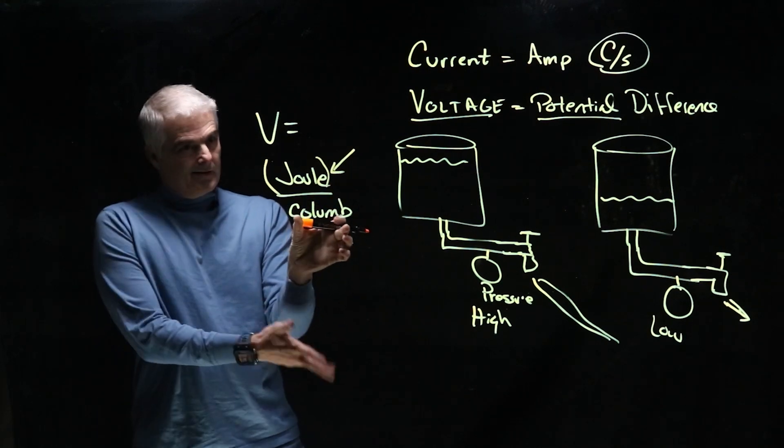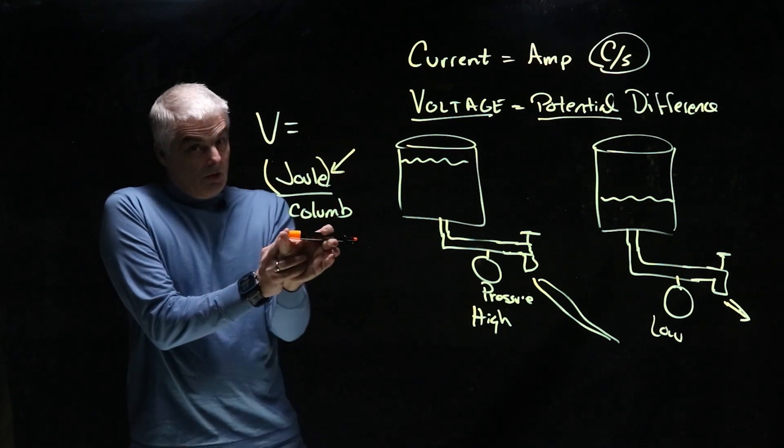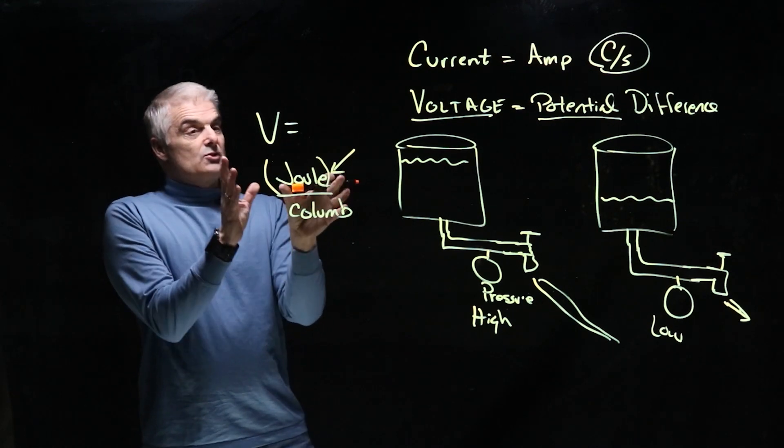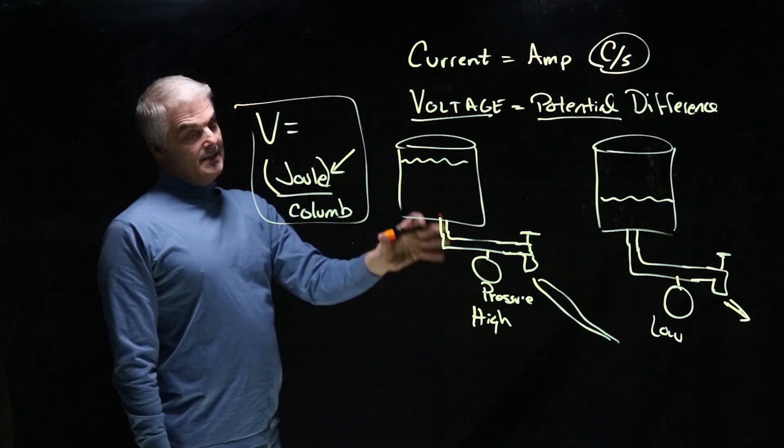That's per like 6 times 10 to the eighteenth electrons. So how much joules are there per electron? If you think about it for a moment, right? So that's voltage. Voltage is the potential difference.